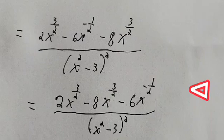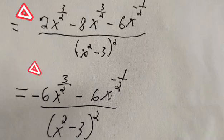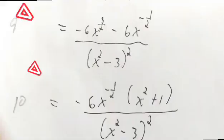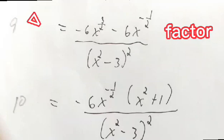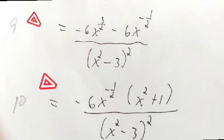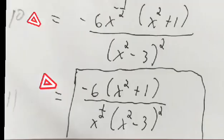Then 2x to the power of 3 over 2 minus 8x to the power of 3 over 2 equals negative 6x to the power of 3 over 2. So the numerator becomes negative 6x to the power of 3 over 2 minus 6x to the power of negative one-half, which is negative 6x to the power of negative one-half times x squared plus 1.